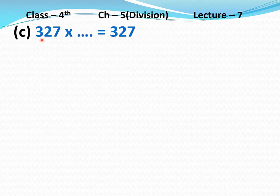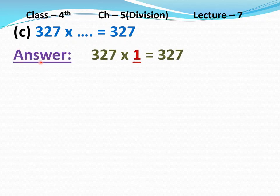Part C: 327 multiply dash equal to 327. The product is the same number, that is 327, so we will multiply by 1. Answer: 327 multiply 1 equal to 327.